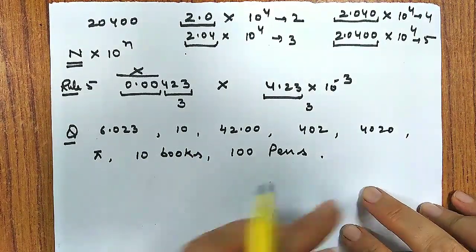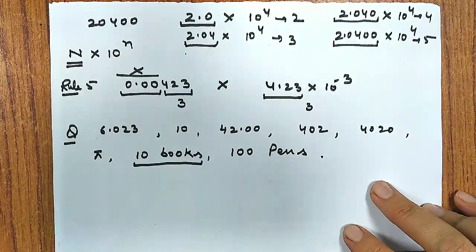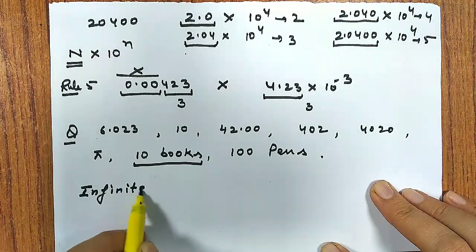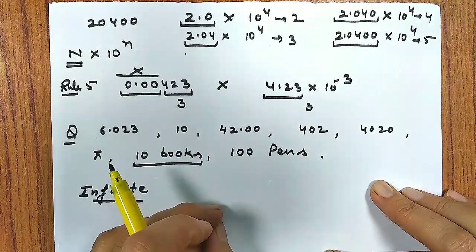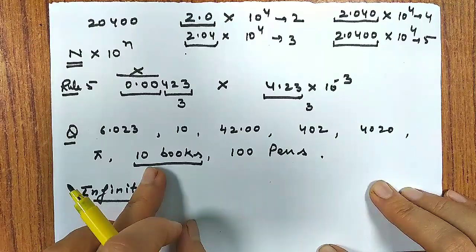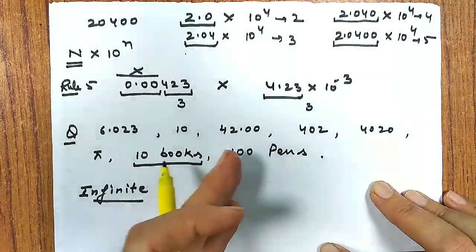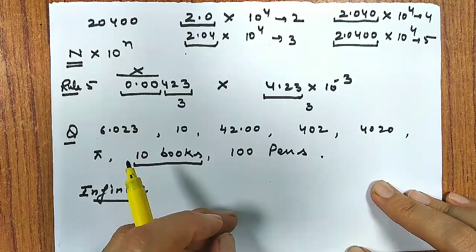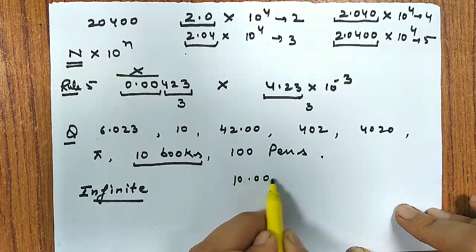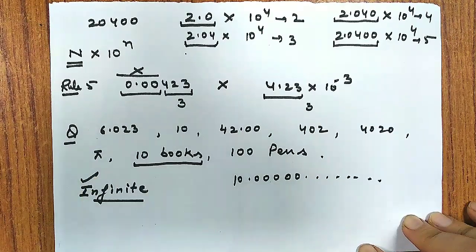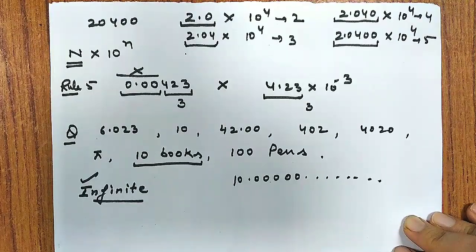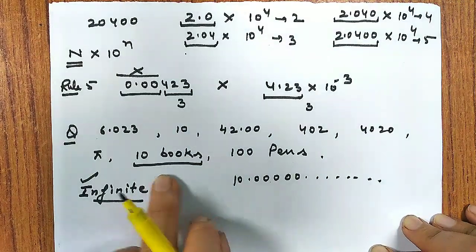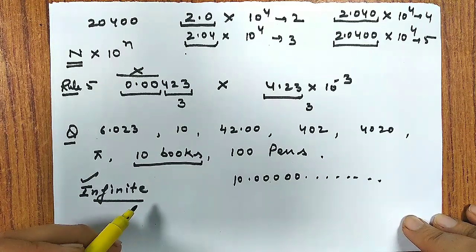Rule number 5: if any zero is preceding non-zero, like 0.00423, then these zeros are not significant because they tell us only the position of decimal. Once I convert it into 4.23 x 10^-3, it has 3 significant figures. These are certain rules to decide the number of significant figures. A few questions: how many significant figures are there in 6.023, in 10, in 4200, in 402, in 4020, in pi, in counting 10 books or 100 pens?